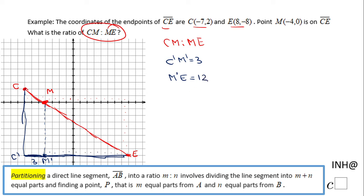So the ratio of C prime M prime to M prime E will be 3 over 12, which is 1 over 4. This ratio is the same for these guys. It's 1 over 4.